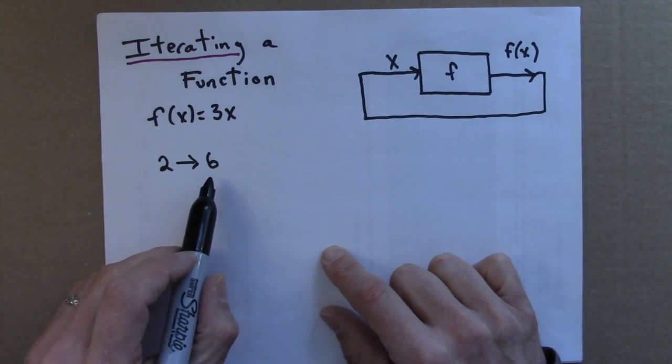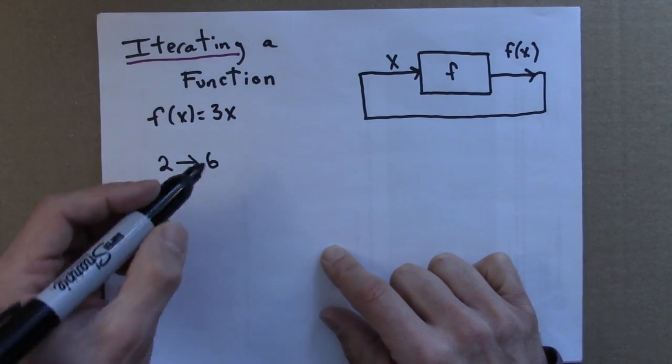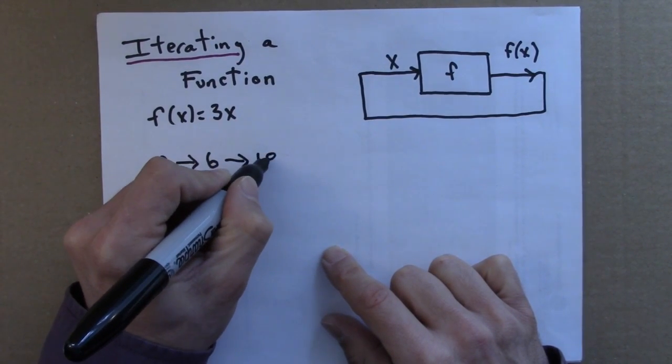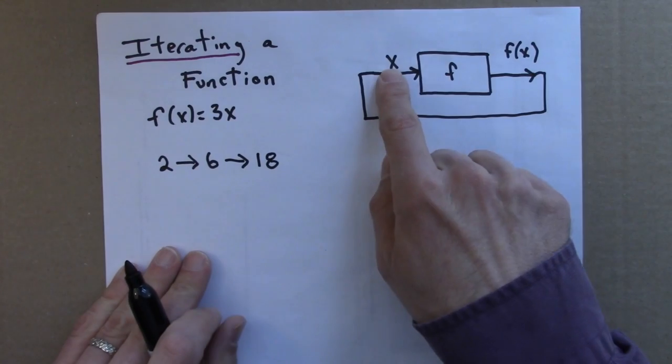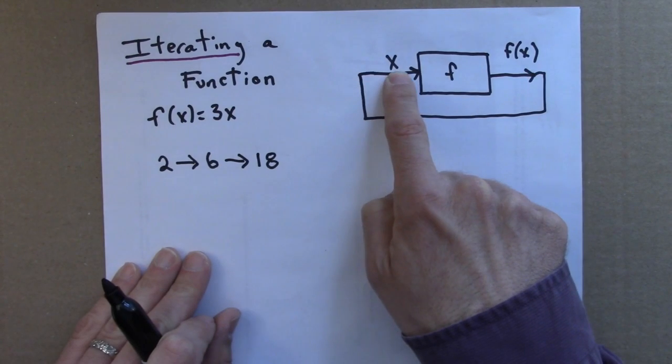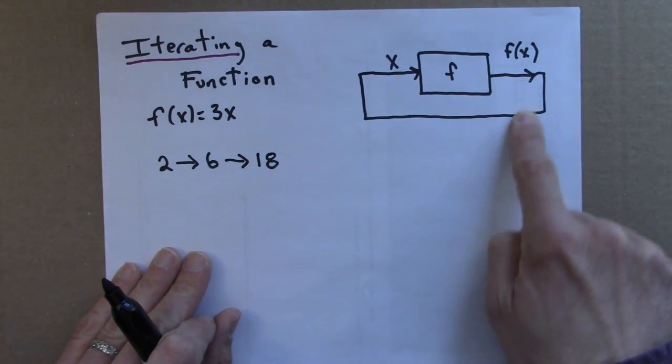Now, what if I apply f to 6? I would triple that, and I would get 18. So, I start with 2. I triple it, I get 6. Move it around here, it's the input again. I triple it again, and I get 18.